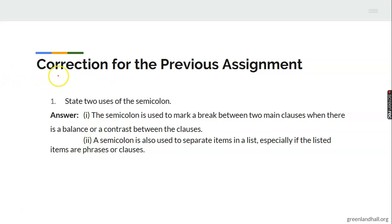Before we proceed, let's look at the correction to the previous assignment. The first question states two uses of the semicolon. The semicolon is used to mark a break between two main clauses when there is a balance or a contrast between the clauses. A semicolon is also used to separate items in a list, especially if the list items are phrases or clauses.